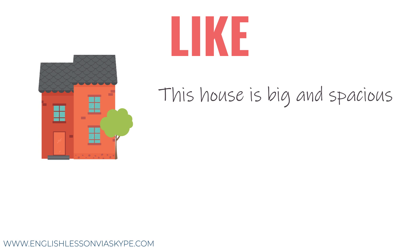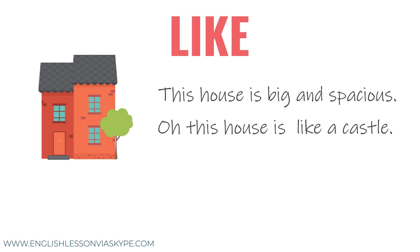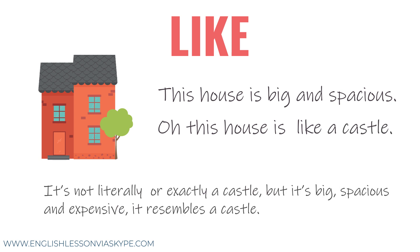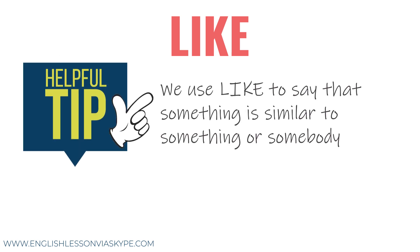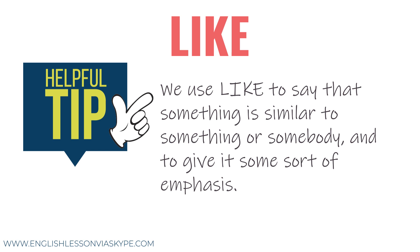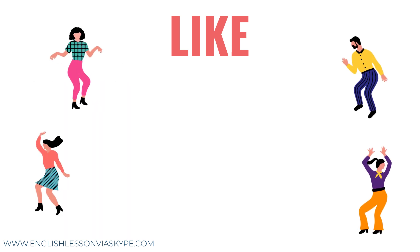Somebody lives in an amazing house — big, grand, spacious. You might say: this house is like a castle. It's not literally a castle; it doesn't have parapets and a drawbridge of course, but it's big and spacious and expensive. So when we use 'like' we don't mean it's exactly the same — we're using it as an example or an exaggeration, just to give it some emphasis.